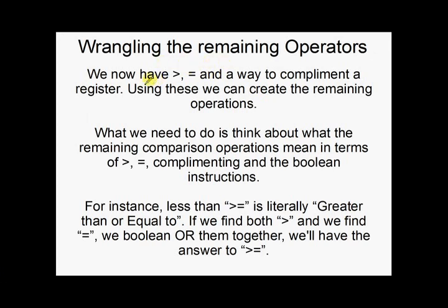Okay. So using those three, we can wrangle the remaining operators. We've got greater than and equals to, thanks to Intel in MMX instruction set. And using these, we can figure out the rest. So all you have to do is think about what the remaining comparison operators mean in terms of greater than, equal to, complementing and the boolean operations. So, for instance, greater than or equal to is literally greater than or equal to. So, if we find greater than, then we find equal to, and we OR the results together, we'll effectively have the greater than or equal to operator.